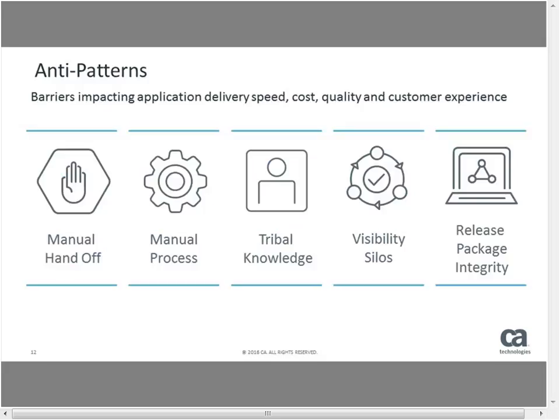Before looking at things we should be doing, let's start with things we should not be doing — the anti-patterns. What are the barriers really impacting cost, quality, and precision, and ultimately the customer experience? The first thing I see is the manual handoff. Not just that it introduces errors, but many times you see that it introduces errors with manual handoffs and manual processes. For example, if you get a set of steps at 9 a.m. you might do it fine, but if you get the same steps in a time-sensitive manner at 3 or 5 a.m. on a weekend, it's not going to be the same. About 50% of errors are caused by manual processes and manual handoffs.